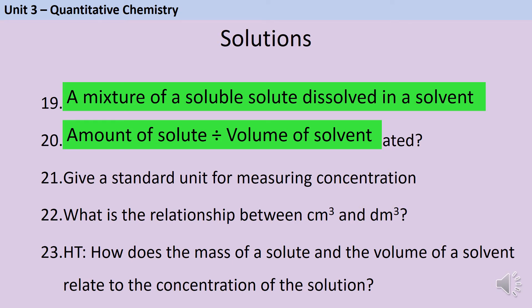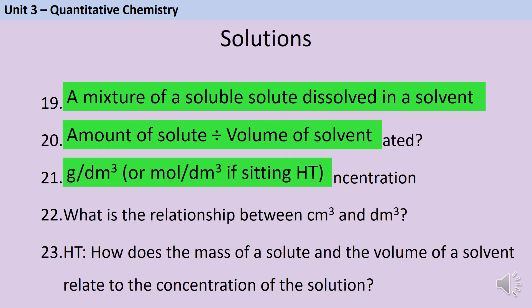The standard unit for measuring concentration is grams per decimetre cubed, although if you're sitting higher tier, we can also give concentration in moles per decimetre cubed. There are 1000 centimetres cubed in a decimetre cubed. As the mass of a solute increases, or as the volume of the solvent decreases, the concentration will get higher.